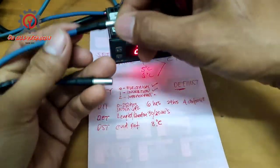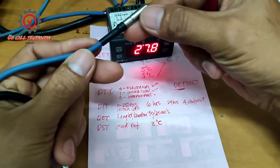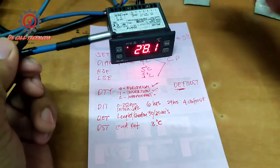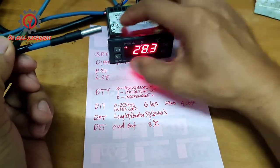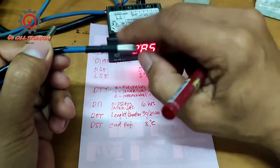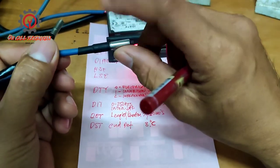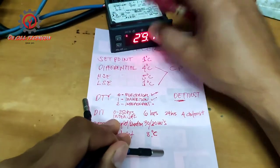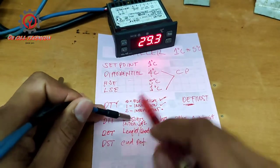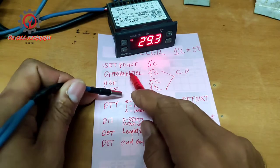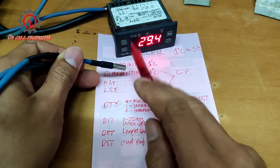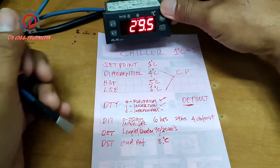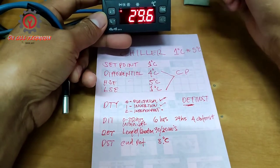The evaporator sensor serves as the defrost end sensor, while the function of the room sensor is to read and control the on and off operation of the compressor. That is the purpose of the differential — that is the role of the room sensor.